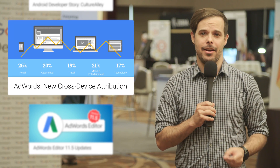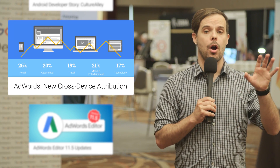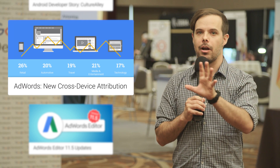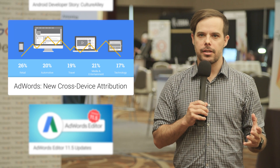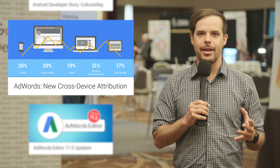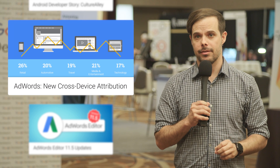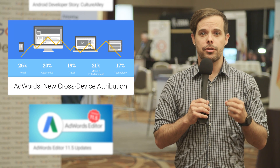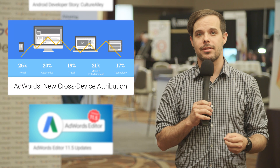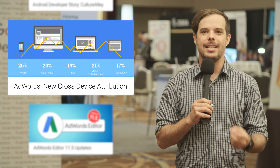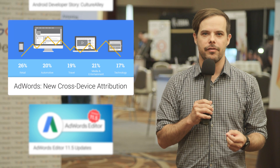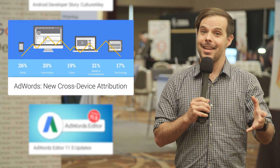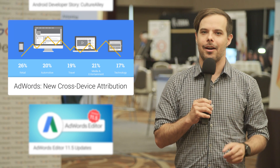Six out of ten internet users in the US start shopping on one device, but continue or finish on a different one. Cross-device conversions already help you measure these customer paths. Using the same technology, we've introduced three new reports in the attribution section of AdWords. These provide deeper insight into device usage along the full search conversion path. Diagrams and details are on the post.